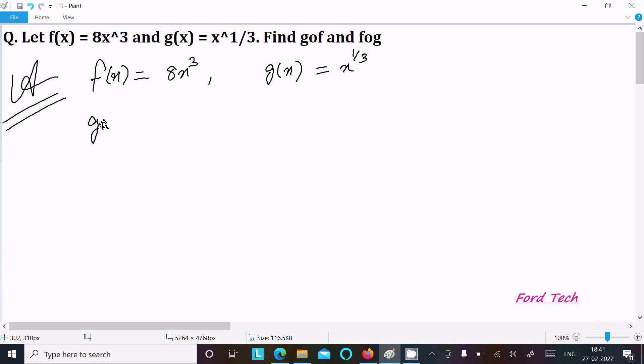Going to write gof, so gof = g∘f(x). This we can write as g∘f(x), and g of f(x) value is now 8x³.